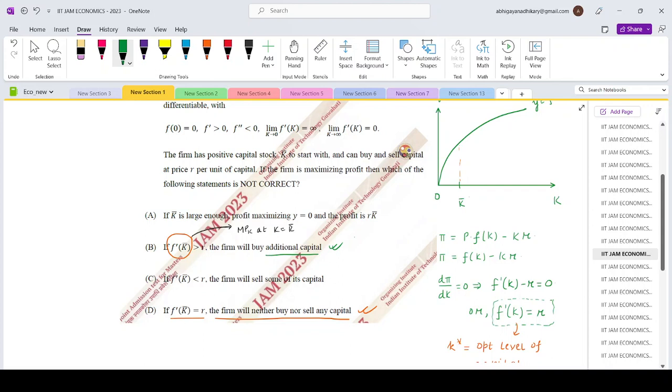The firm would prefer to reduce its amount of capital, so the firm will sell capital. So this is also correct. So that means by elimination, the option which is not correct as told to point out in the question is option A.